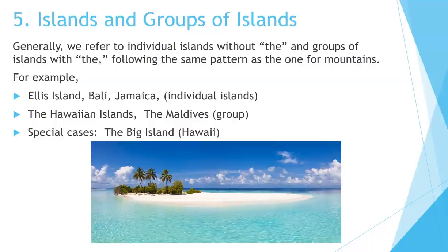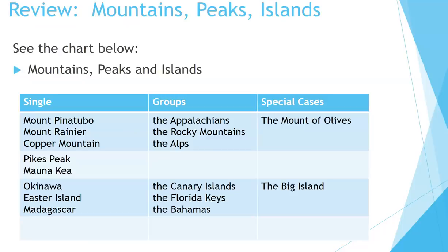Special cases: The Big Island in Hawaii is referring to one island. Review — Mountains, peaks, and islands. Single mountains: Mount Pinatubo, Mount Rainier, Copper Mountain, Pikes Peak, Mauna Kea. Groups: The Appalachians, The Rocky Mountains, The Alps. Special cases: The Mount of Olives. Islands: Okinawa, Easter Island, Madagascar. Groups: The Canary Islands, The Florida Keys, The Bahamas. Special cases: The Big Island in Hawaii.